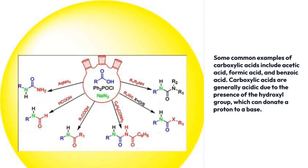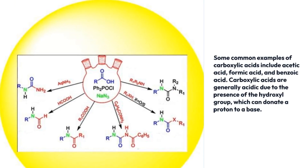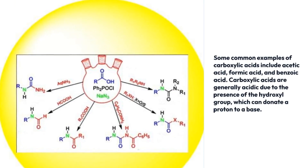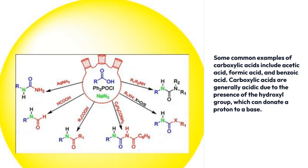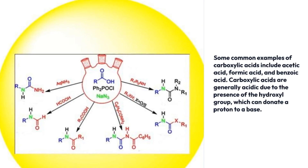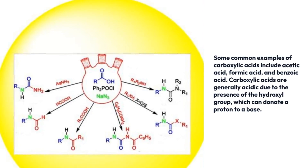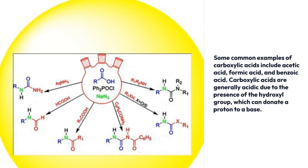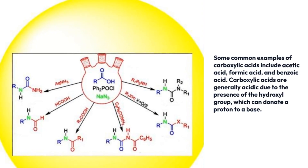Some common examples of carboxylic acids include acetic acid, formic acid, and benzoic acid. Carboxylic acids are generally acidic due to the presence of the hydroxyl group, which can donate a proton to a base.